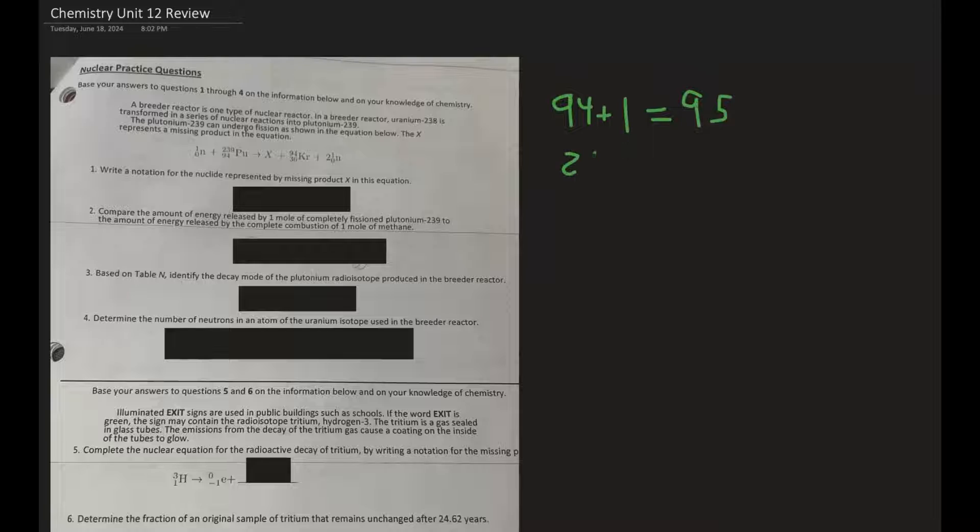Ultimately we need to balance the mass — it's 240 on the left side. So we subtract 95, and that gets us 144. So our mass is going to be 144. Let's write 144 over here.